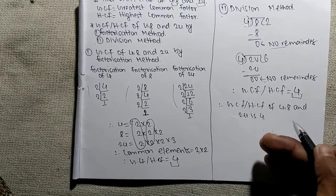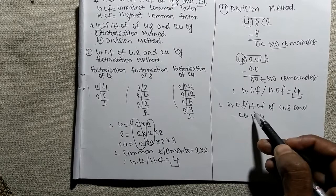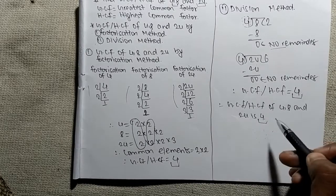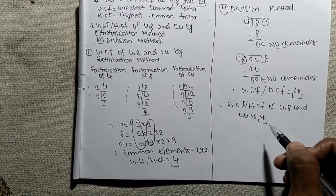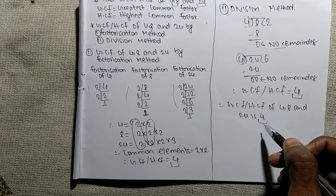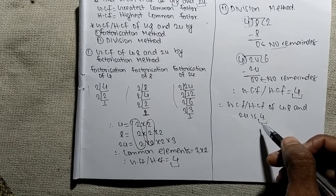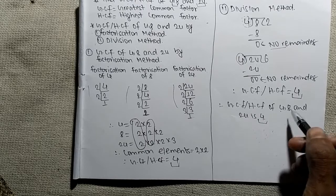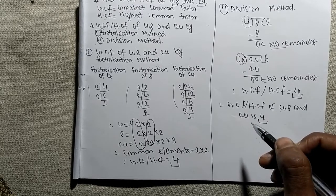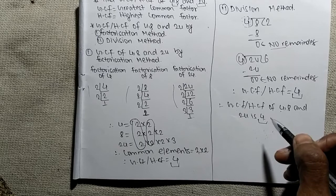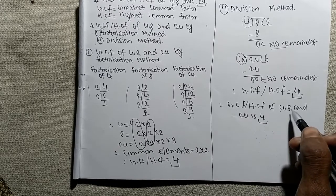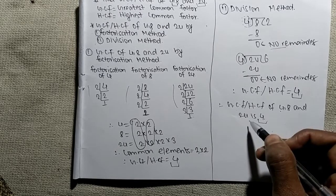What does it mean that GCF or HCF of 4, 8 and 24 is 4? It shows that 4 is the greatest number which can exactly divide 4, 8 and 24. There is no other number greater than 4 which can exactly divide 4, 8 and 24.